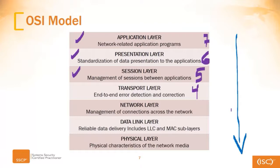We hand it off to somebody who checks it, logs it in, makes sure all the information is correct, and sets it up so it ultimately gets delivered to the right place. That's what happens at the transport layer — end-to-end, session-to-session, connection-to-connection, error detection and correction. If something goes wrong, we figure it out here and try to fix it. That's what's happening at the transport layer.